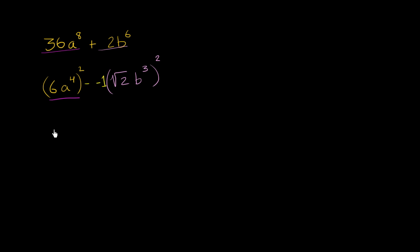So we can rewrite this whole thing as 6a to the fourth squared, and then we have this minus right over here. And so this is i squared, negative 1 is i squared. So we could rewrite this as i times the square root of 2 times b to the third, all of that squared.